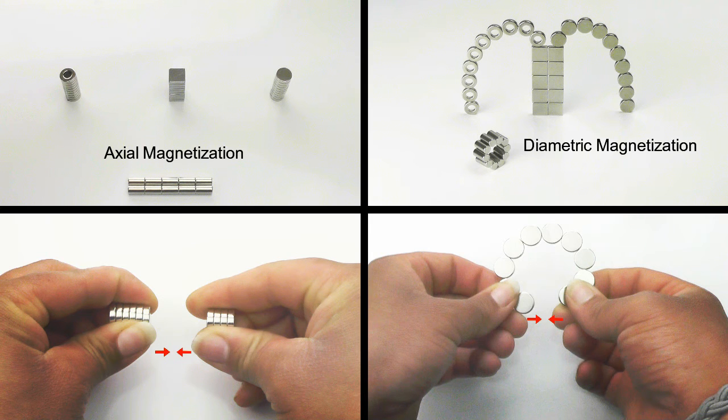Knowing which magnetization you need is very important when selecting. The easy rule is when in doubt, choose axial.